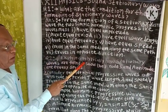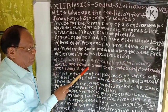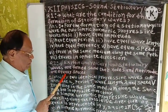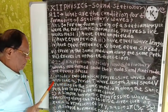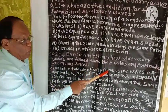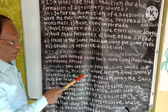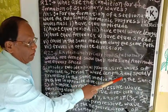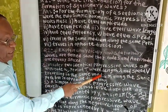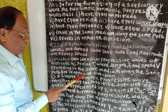Question 2: Explain analytically how stationary waves are formed and show that nodes and antinodes are equally spaced. First point: Consider two identical progressive waves of amplitude A, period T, wavelength lambda, and speed V, travelling in the same medium along the same path but in opposite directions.